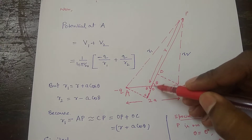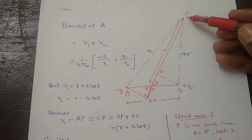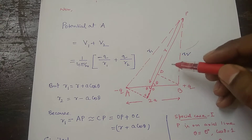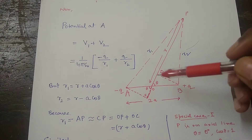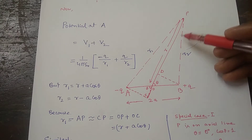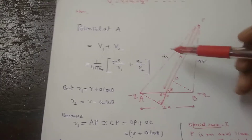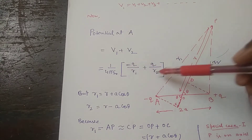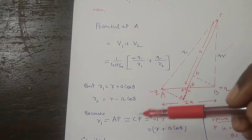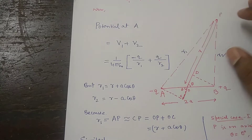We draw a perpendicular from point B on the line OP, called BD. Similarly, from point A we draw perpendicular AC on the line PO produced. Now the expression for R1 is R plus A cos theta, and R2 is equal to R minus A cos theta.